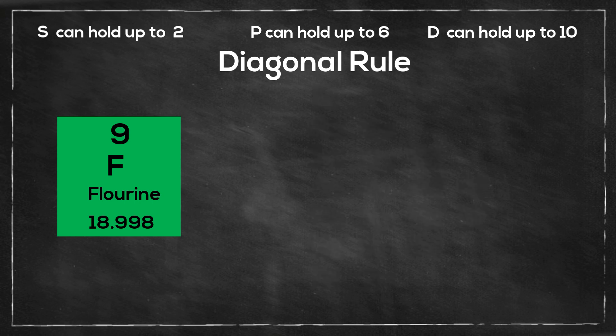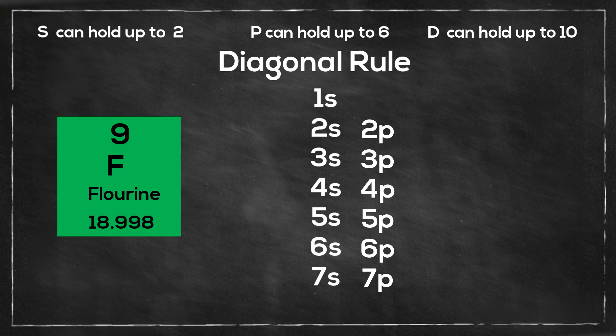I will start at the s orbital and number it 1 through 7. Next I will go to the p orbital, number it 2 through 7, then the d orbital, then the f orbital.